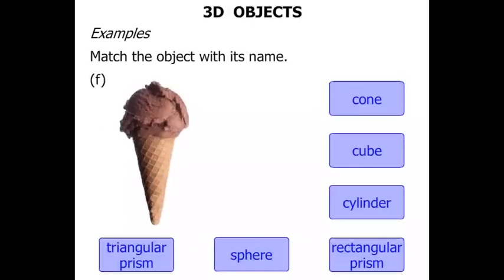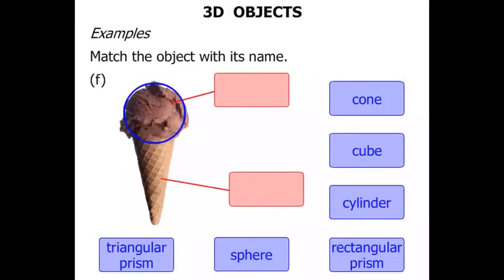Mmm, yum yum. Two parts. We've got the top and the bottom of this ice cream. Well the top again, is a roundish shape. So yes, we've got the sphere again.